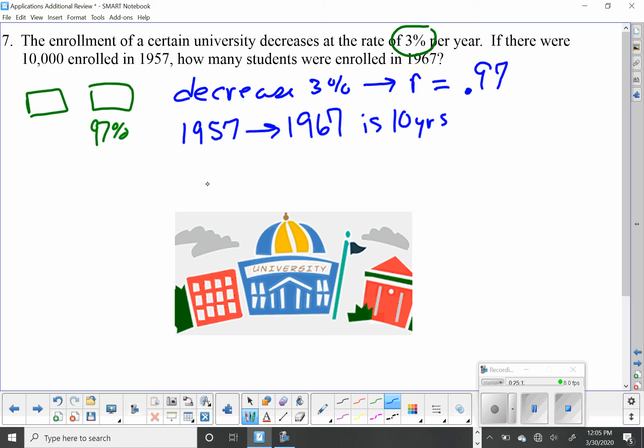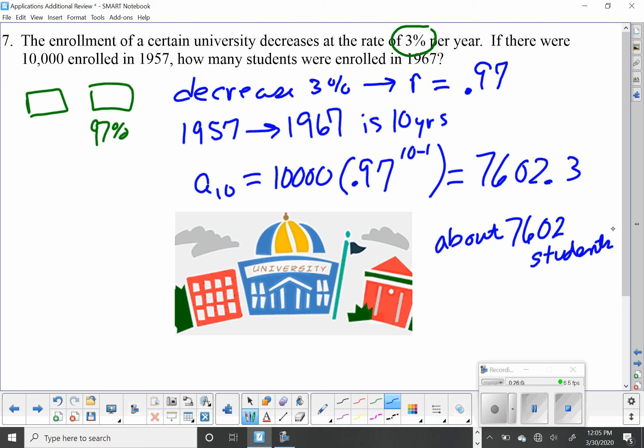1957 to 1967, that's 10 years. So what I want is a sub 10. Because I'm talking about a percent of increase or decrease, I know this is geometric. And I started out with 10,000. That's my a sub 1. I'm going to multiply that by my R, which is 0.97, that's the tricky part here, raised to the 10 minus 1. Just plug the numbers in, and you'll find out that you have 7,602.3 students. Since you can't have a third of a student, we say there will be about 7,602 students.